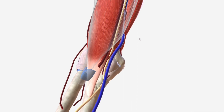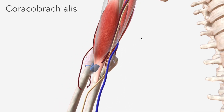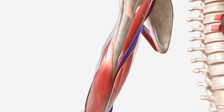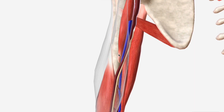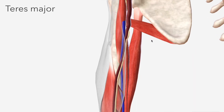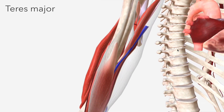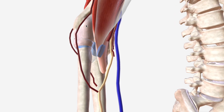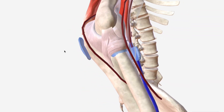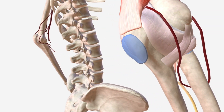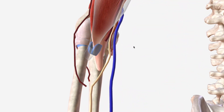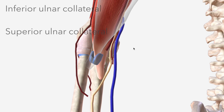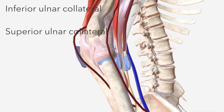The coracobrachialis muscle runs from the coracoid process of the scapula to its insertion point around the midpoint of the upper arm. The teres major muscle is also visible, with its inferior border marking the beginning of the brachial artery. The elbow joint itself — its ligaments, bursae, and articular cartilage — are all supplied by the arterial anastomosis of the elbow, to which the inferior ulnar collateral and superior ulnar collateral contribute quite heavily.